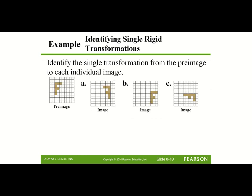From here, we're going to take a look at our pre-image and identify what each part — A, B, and C — would be: a translation, a reflection, or a rotation. Looking from the pre-image to A, the F is now a mirror image, so A is a reflection. For B, the F is still oriented the exact same way but it moved on the grid, so that is a translation or a slide. For C, the original F is standing upright but it is facing downward, so that is a rotation.